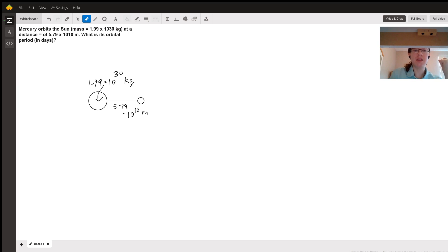Well, our assumption is that Mercury is traveling in uniform circular motion around the sun. So ignore the terrible circle. That's about what it looks like. And so if we can find the velocity at which Mercury is orbiting around the sun, then we can find the period.